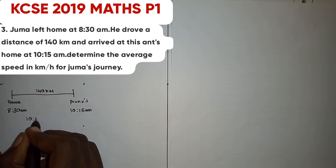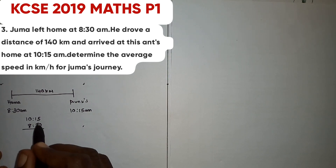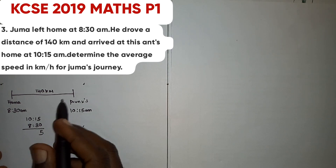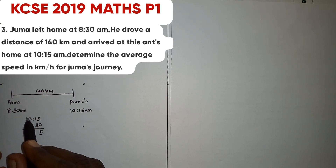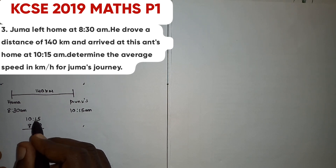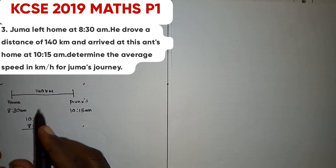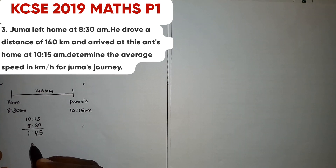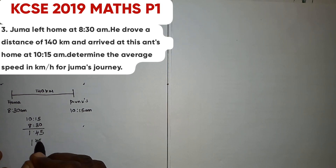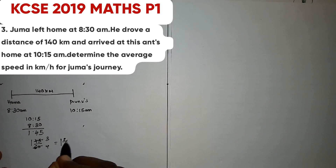We say 10:15 minus 8:30. Minutes: 5 minus 0 is 5. 1 minus 3 is impossible, so we borrow 1 from the hours column. We get 11 minus 3, which is 8... giving us 7. Then 9 minus 8 is 1. Total time taken is 1 hour and 45 minutes. Converting to hours: 1 and 3/4 hours.